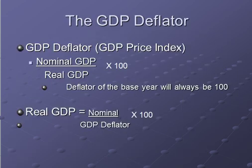When we get into GDP calculations, we're going to use the GDP deflator and the GDP price index. Essentially, the GDP deflator is nominal GDP over real GDP times 100. As a side note, the deflator of the base year will always be 100. Another form of that equation is: real GDP equals nominal GDP over the GDP deflator times 100.